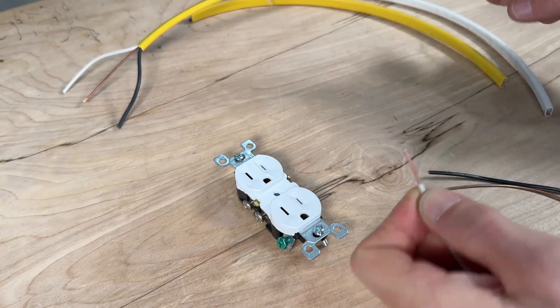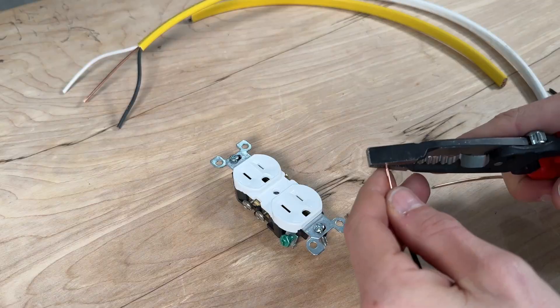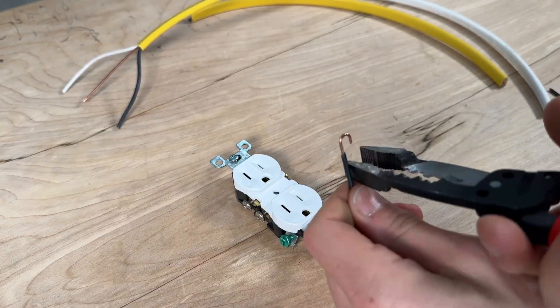You want to strip off about three quarters of an inch of insulation from both your conductors. Then I'll use the jaws of my hybrid wire strippers here by Klein to make a perfect J hook.